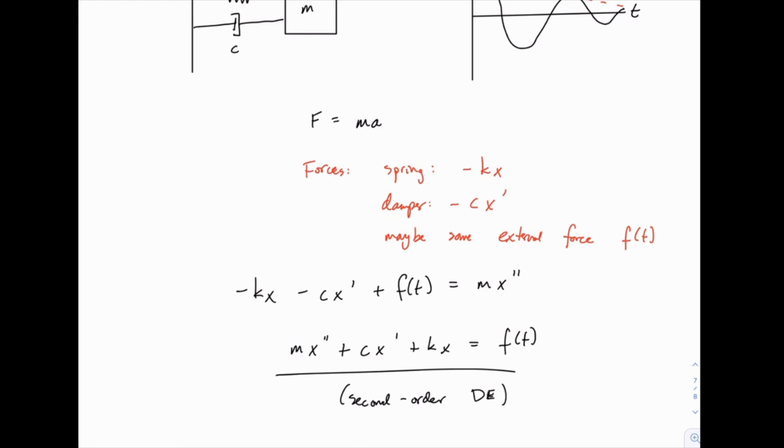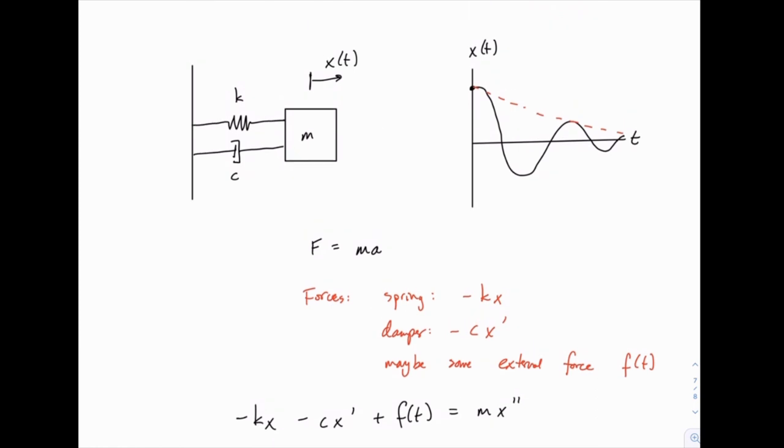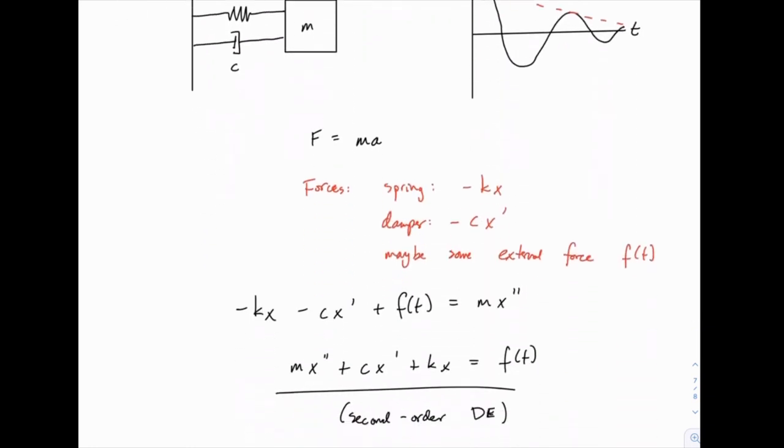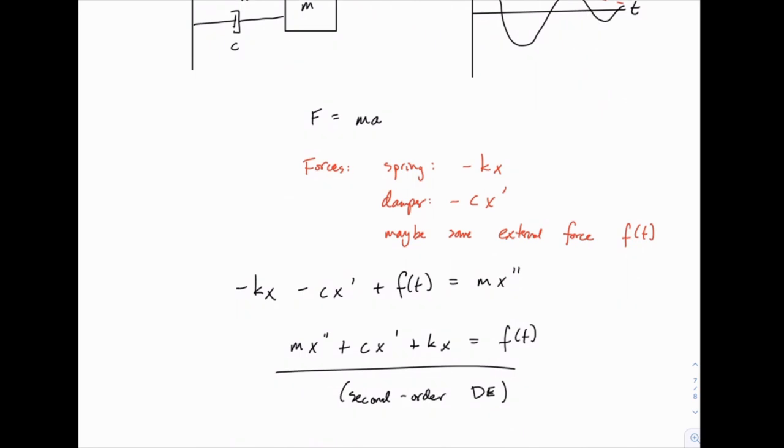It turns out, although we won't take the time to do this, that there's a similar approach for electrical engineering. If instead of a mechanical system with a mass, a spring, and a damper, if you draw a simple circuit with voltage and current and conductance and so on, you have a resistor and a few other elements.